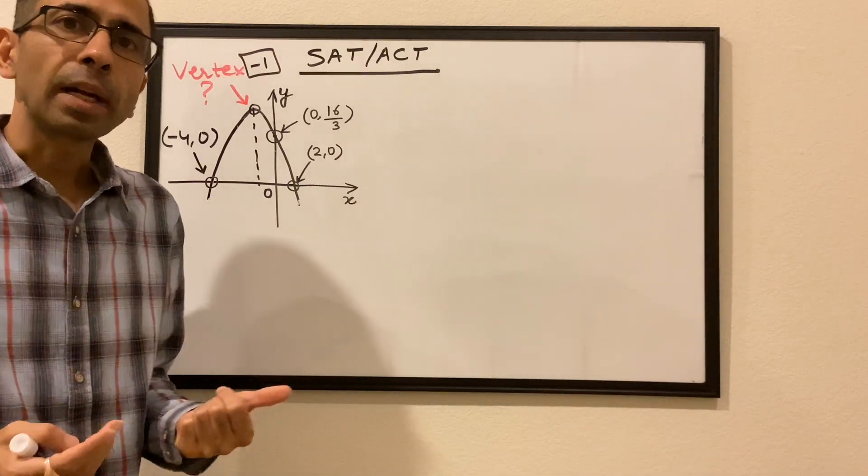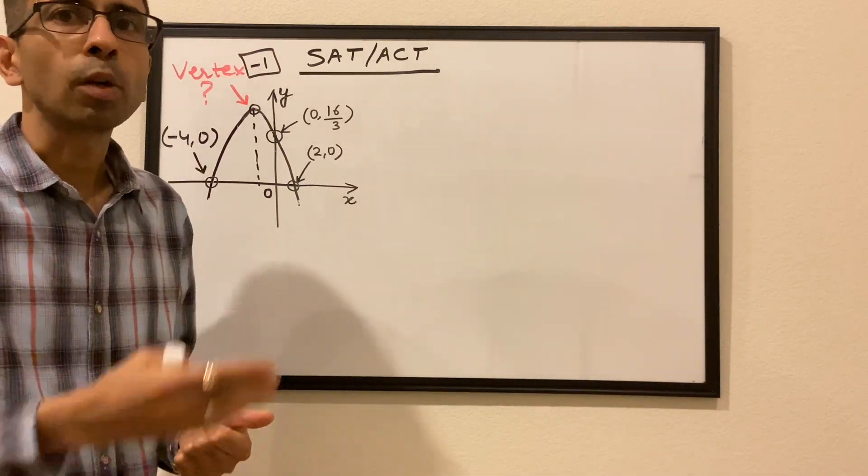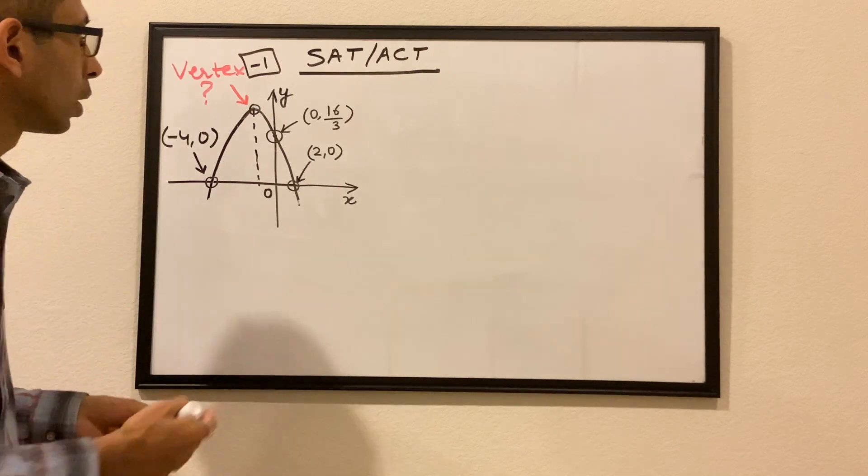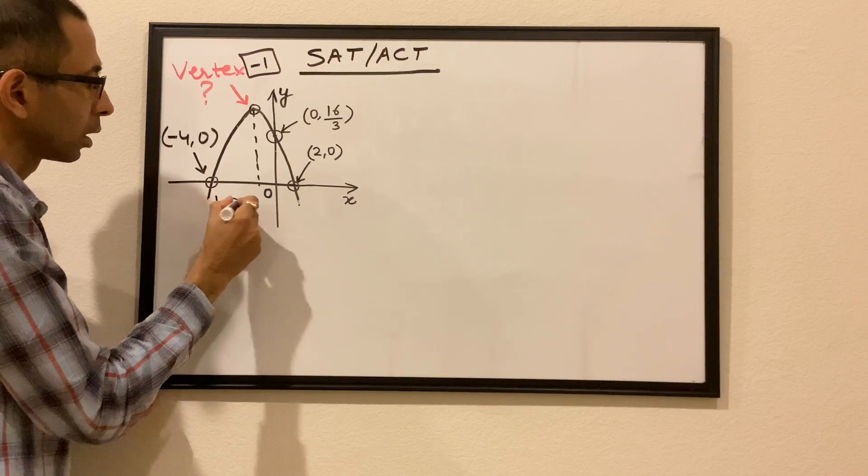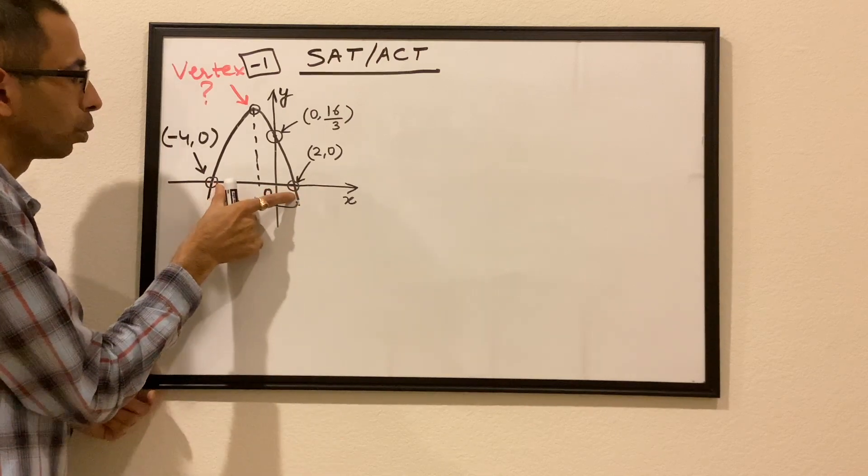Now we all know that a parabola is symmetrical around the axis of symmetry. So we know off the bat that the x-coordinate of the vertex would be the midpoint of these two points.